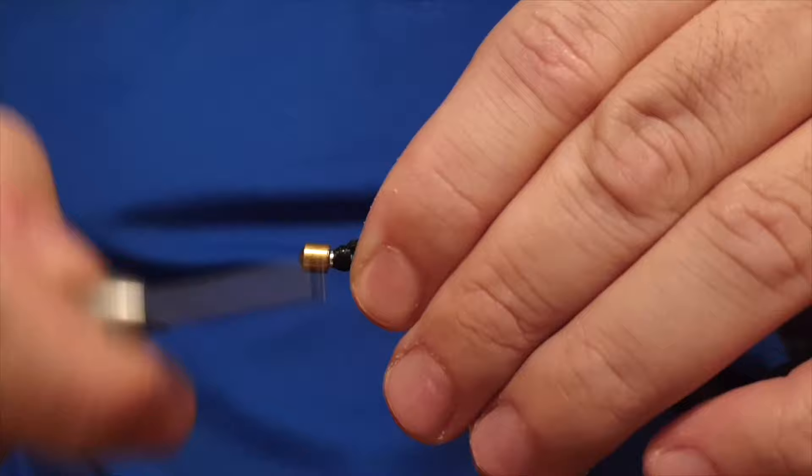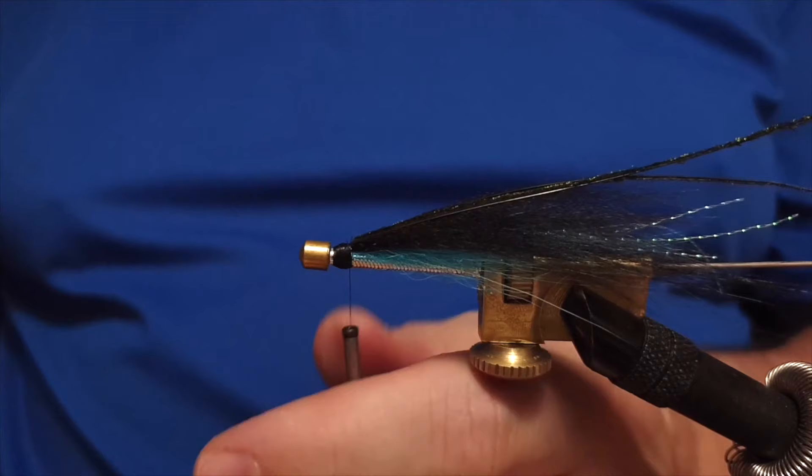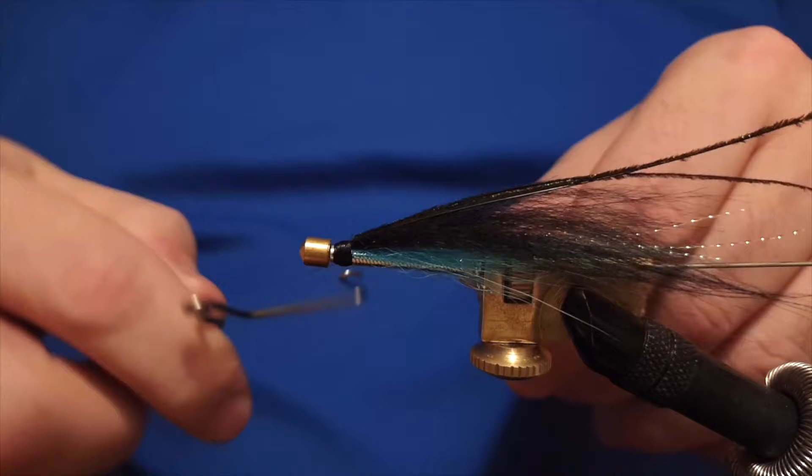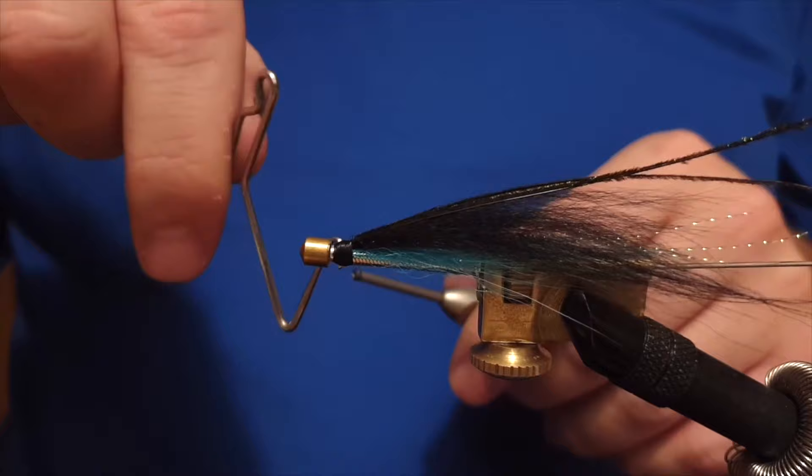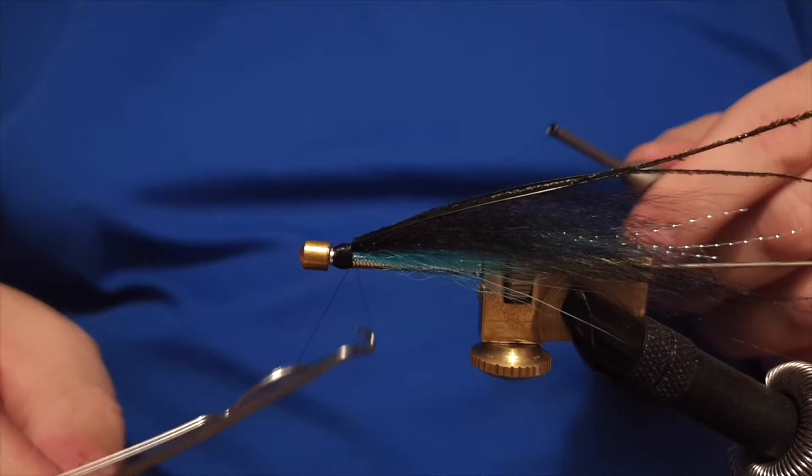Then we'll be starting to build up the head of the fly, which is going to be the permanent head of the fly. Then we will do the whip finishing job on the head. We'll do it a couple of times at least and get it secure there, then trim off the thread.